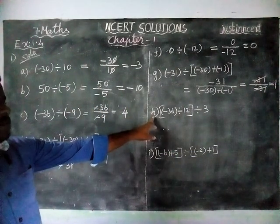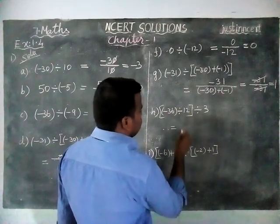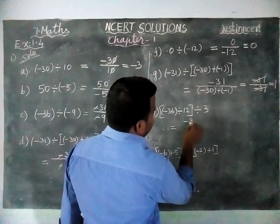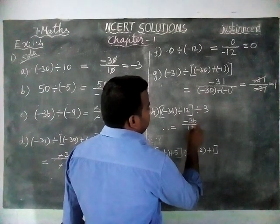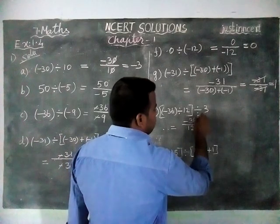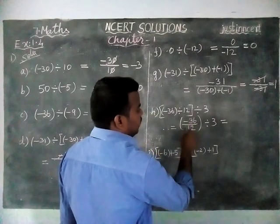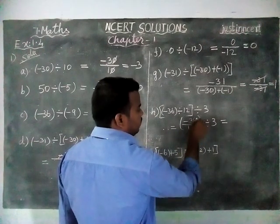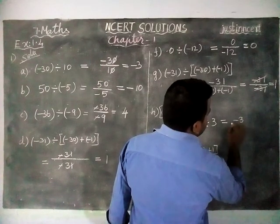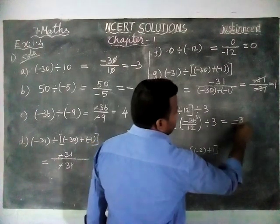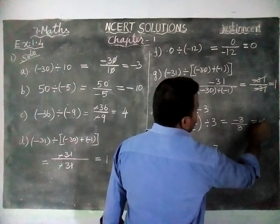Next, option H: first, we have to divide these two — minus 36 divided by 12. Then with that whole answer, we divide by 3. When we are dividing: 1 twelve is 12, 3 twelves are 36. So minus 36 divided by 12 gives minus 3. Then minus 3 divided by 3: 3 threes is 1. Signs are different, so the answer is minus 1.